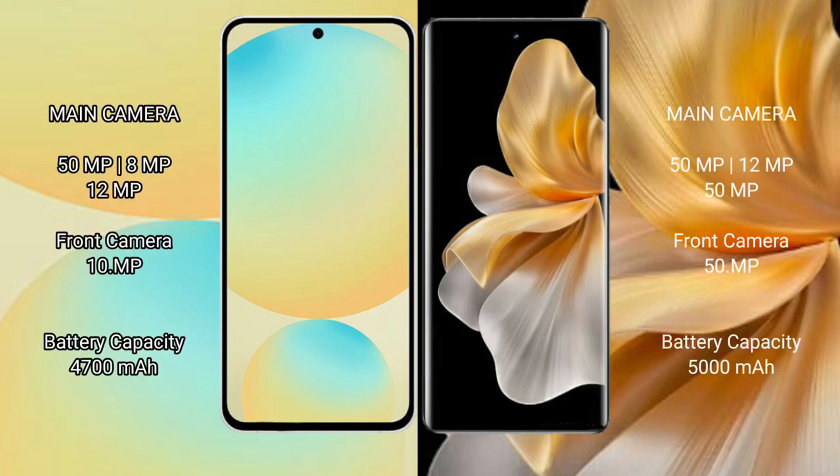The Samsung Galaxy S24 FE has a triple rear camera setup of 50MP plus 8MP plus 12MP, with a 10MP front camera. The Vivo S18 Pro has a triple rear camera setup of 50MP plus 12MP plus 50MP, with a 50MP front camera.